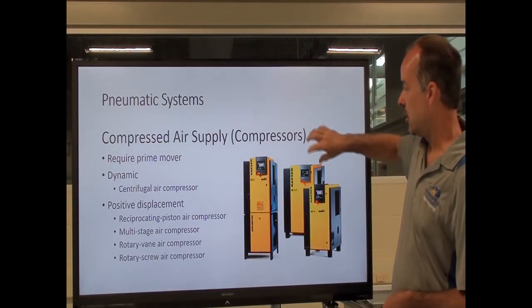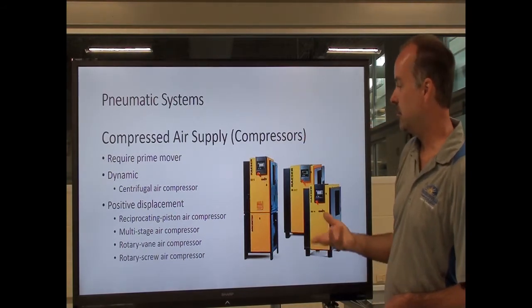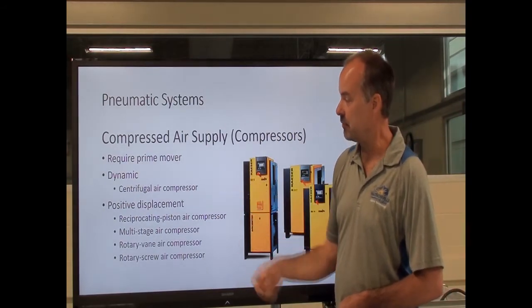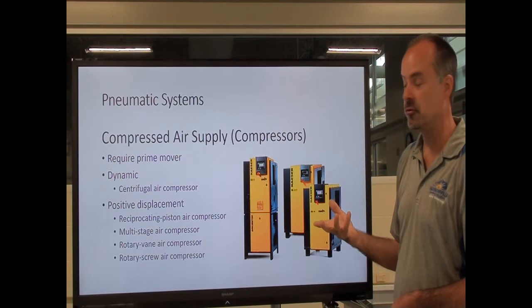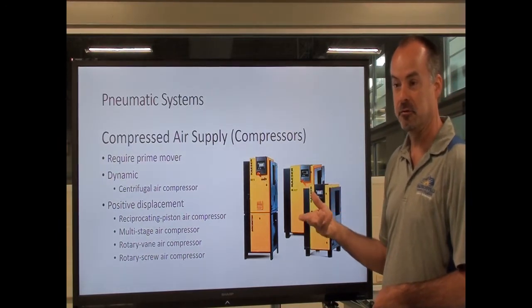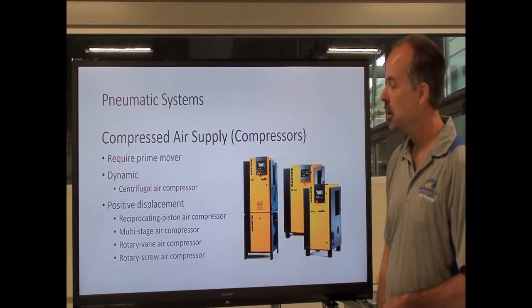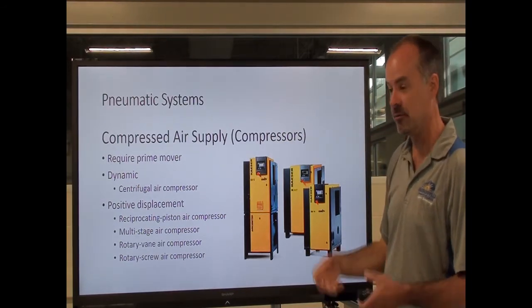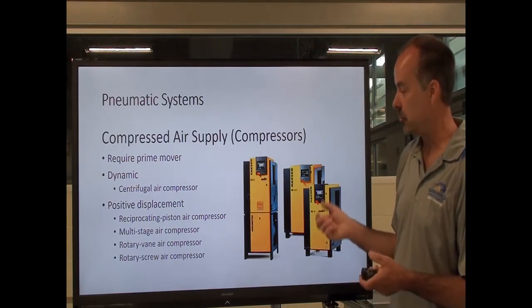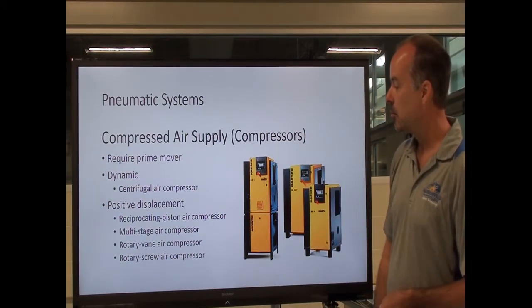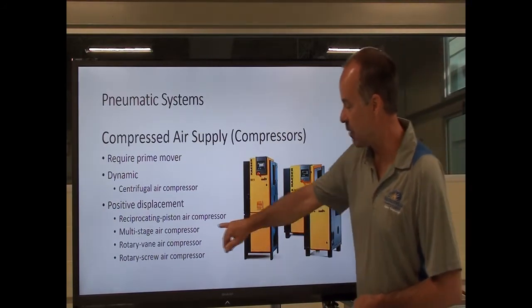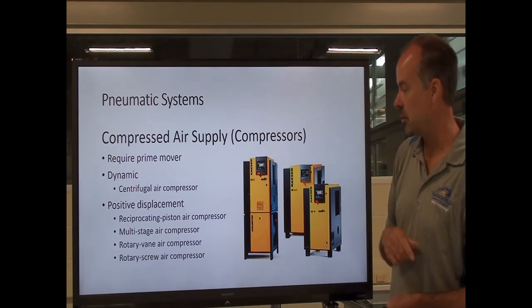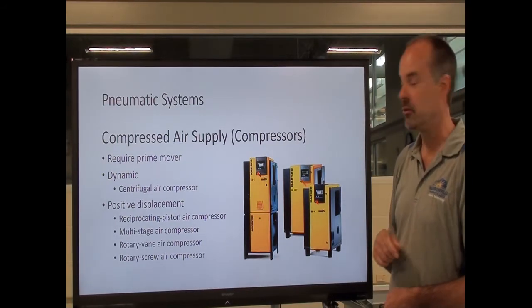A compressed air supply comes from an air compressor. Like in hydraulics, we have a couple different types. We have dynamic, which is not a positive displacement — it spins much like a fan. Versus a positive displacement that has tight tolerances and sealed pumps to generate pressure and flow. We're going to look at a few different types: reciprocating piston air compressor, multi-stage air compressors, and rotary vane and rotary screw air compressors.